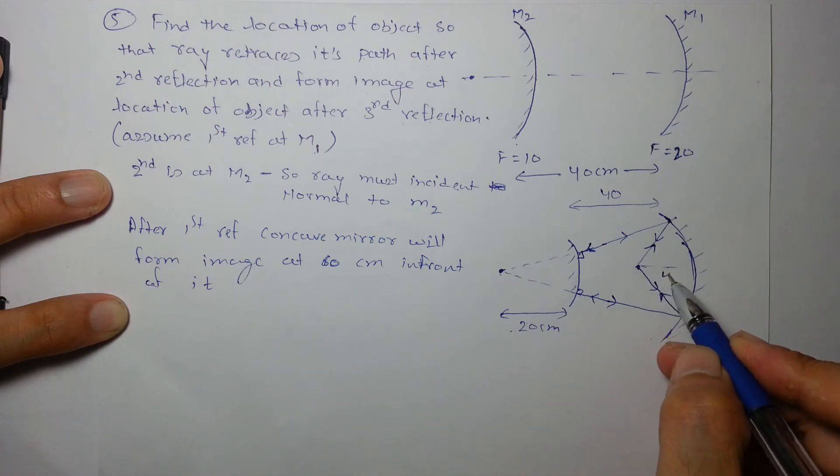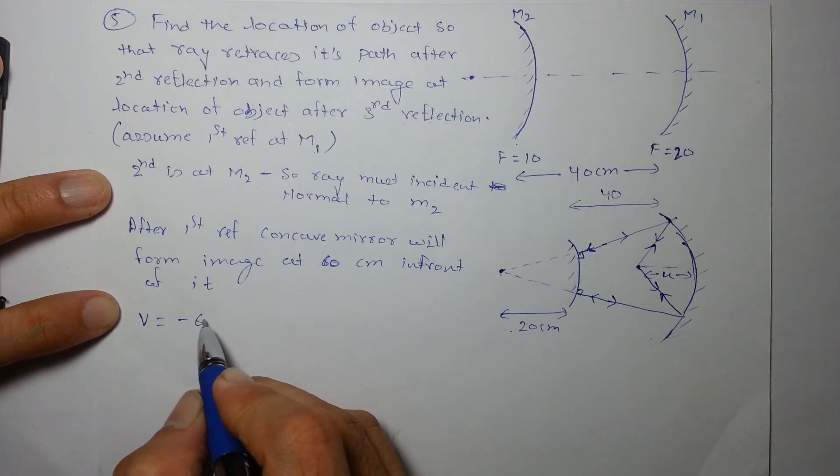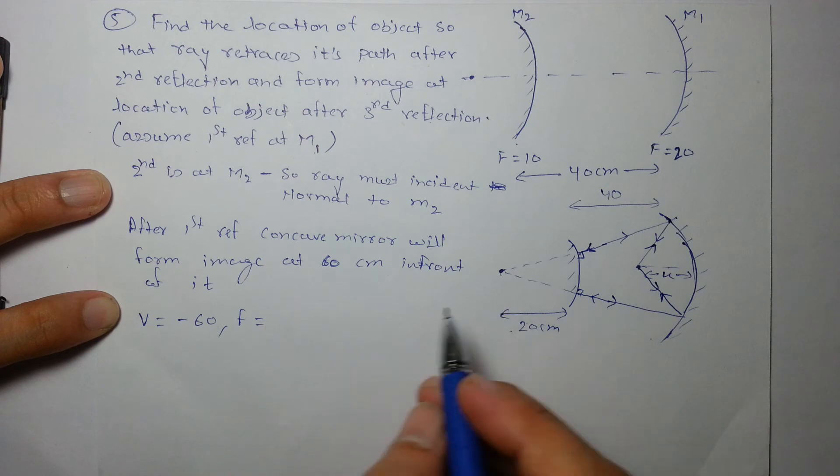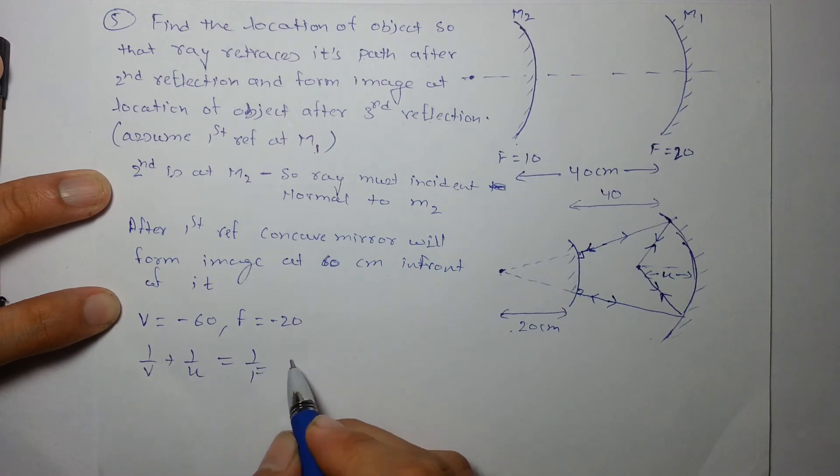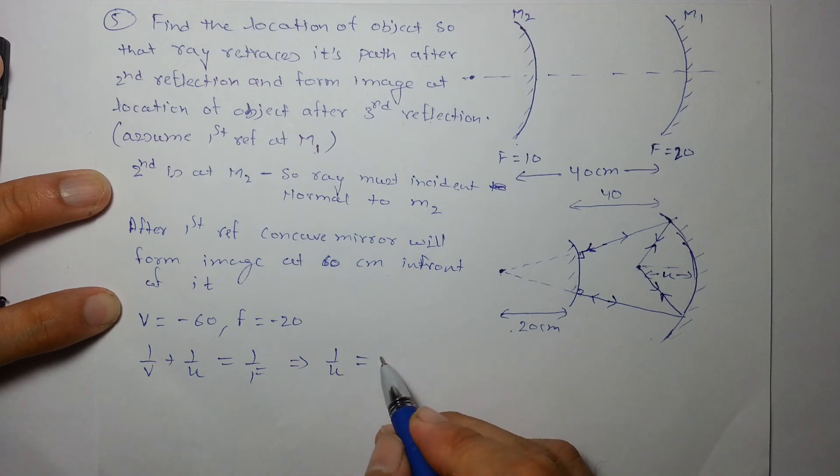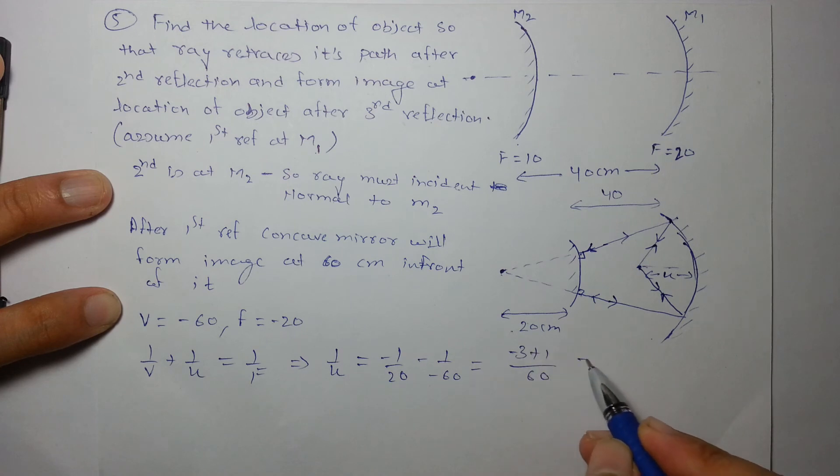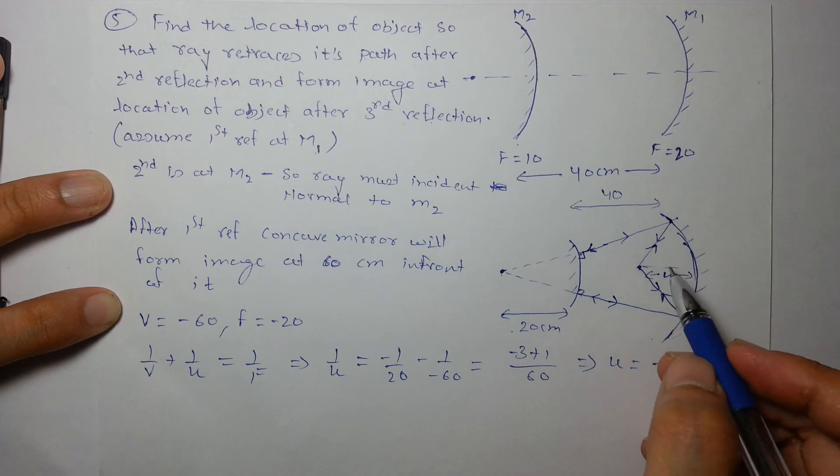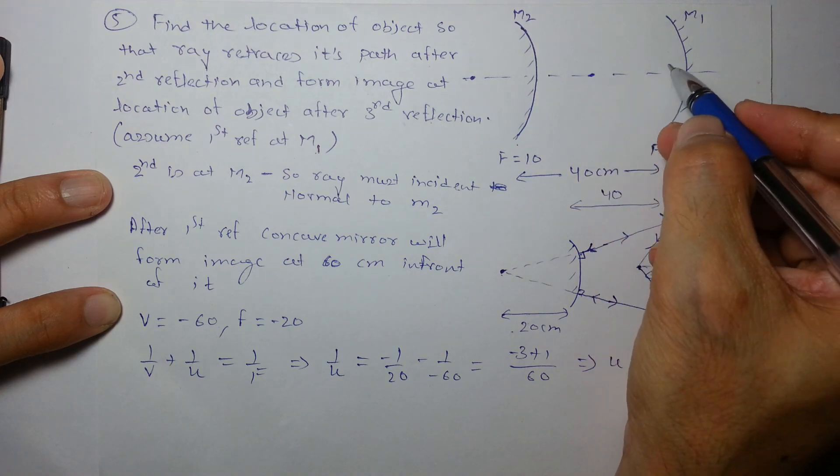So v is known to us, minus 60. f is known to us for first mirror, it's minus 20. And we have to find u. Again using formula 1/v + 1/u = 1/f, I will calculate 1/u as -1/20 - (-1/60), that will give you 60 as LCM, that will be -3+1. u is minus 30 centimeter. So it should be placed at a distance of 30 centimeter.